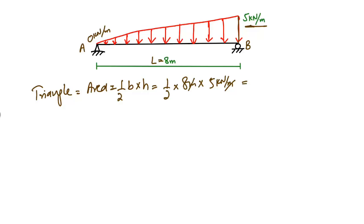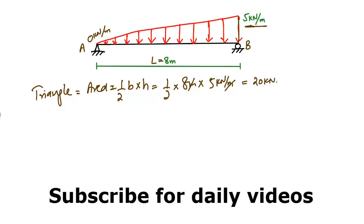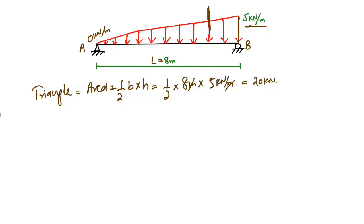So 5 × 8 = 40, divided by 2, gives us 20 kN. This means a 20 kN load is acting on this beam at the centroid. What we have done is convert the uniformly varying load (UVL) into a point load or concentrated load. By doing this, we find the equivalent point load is 20 kN.